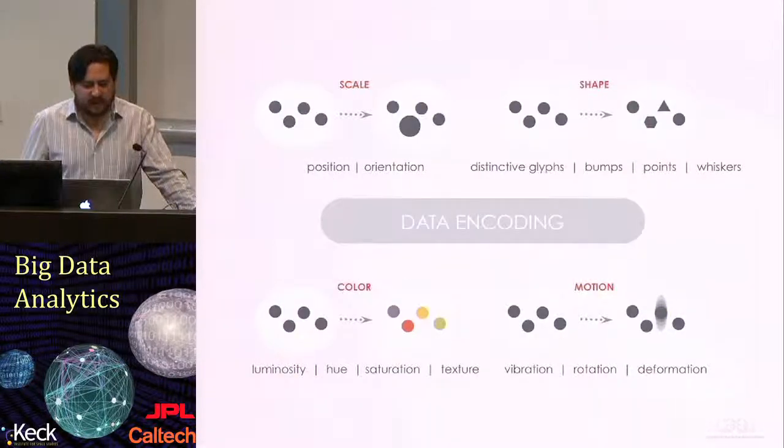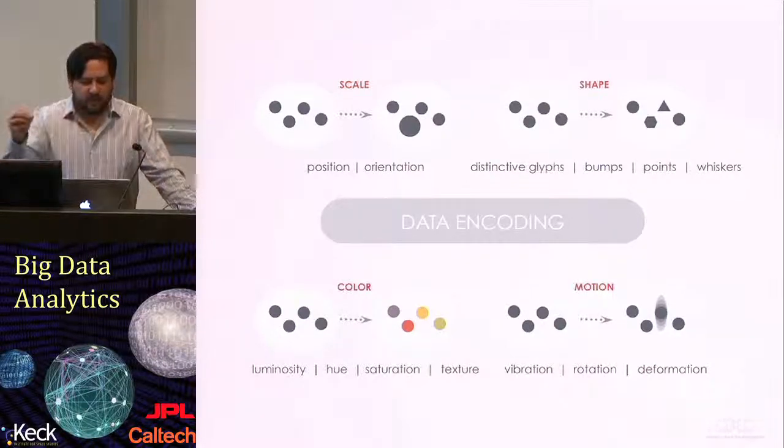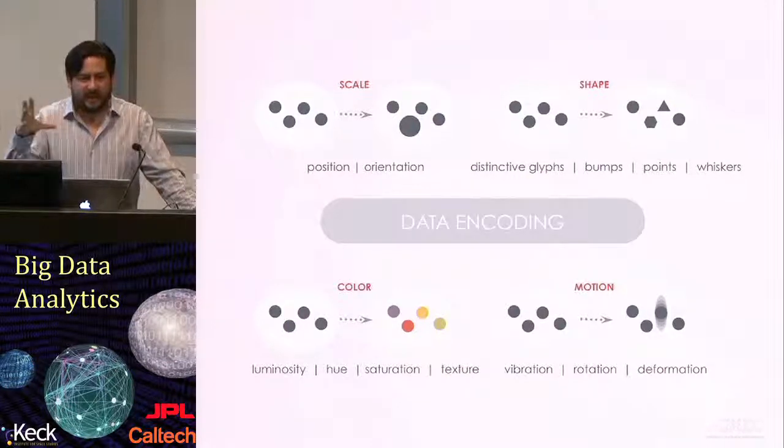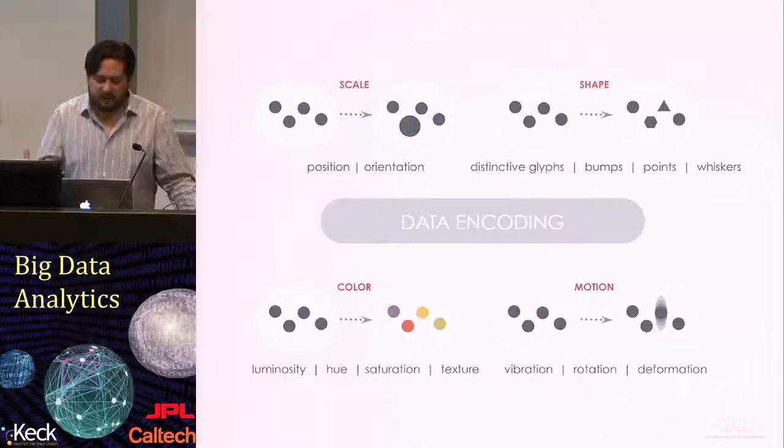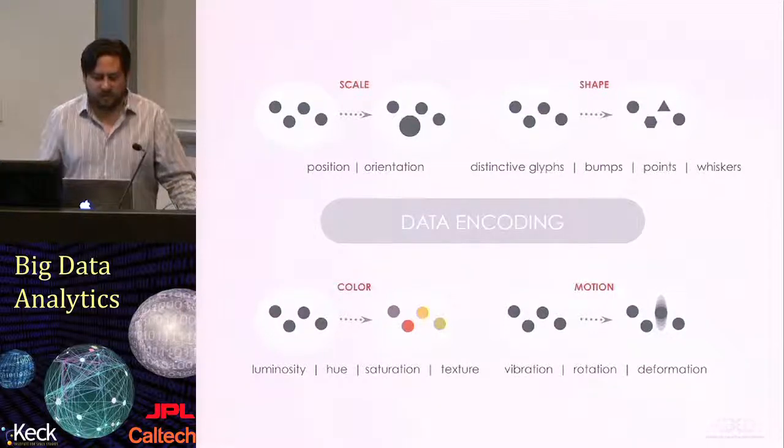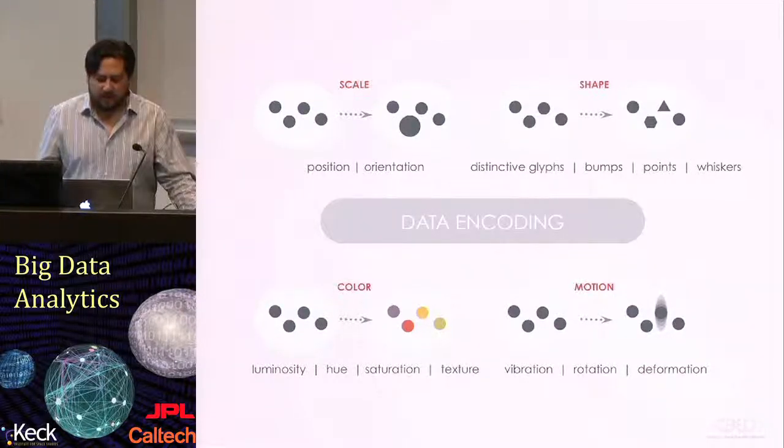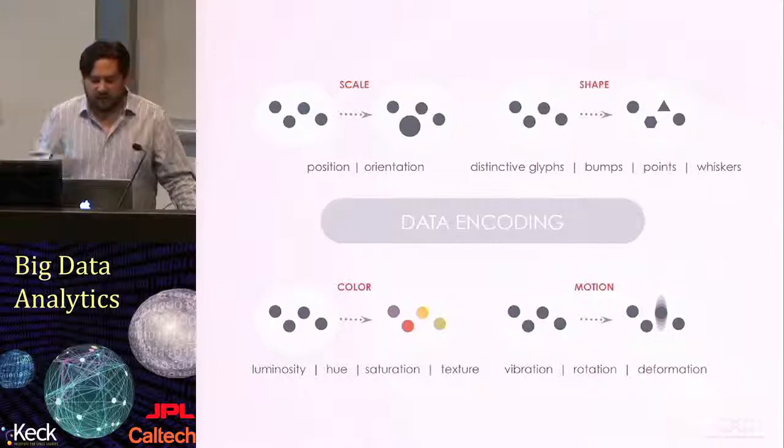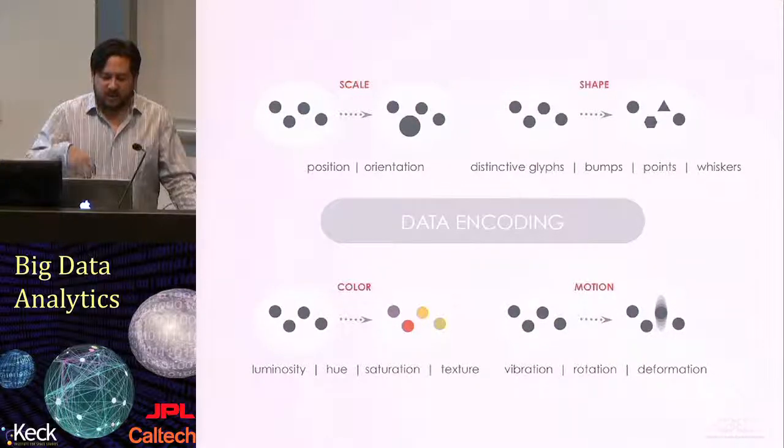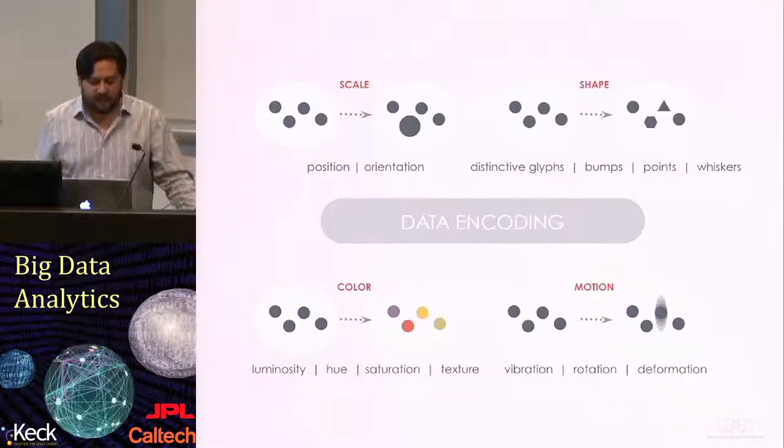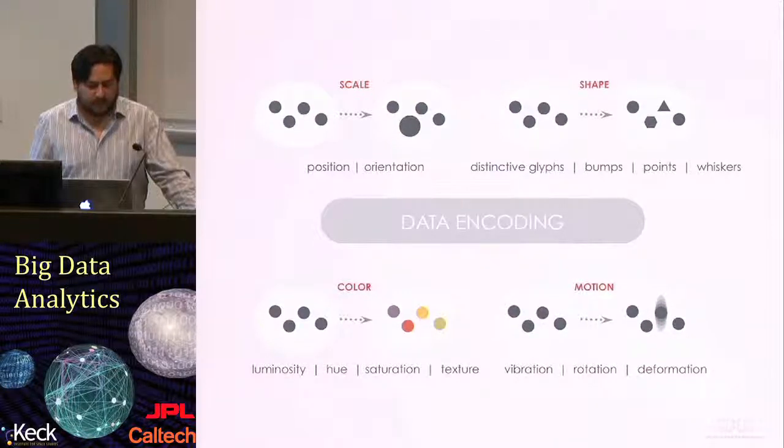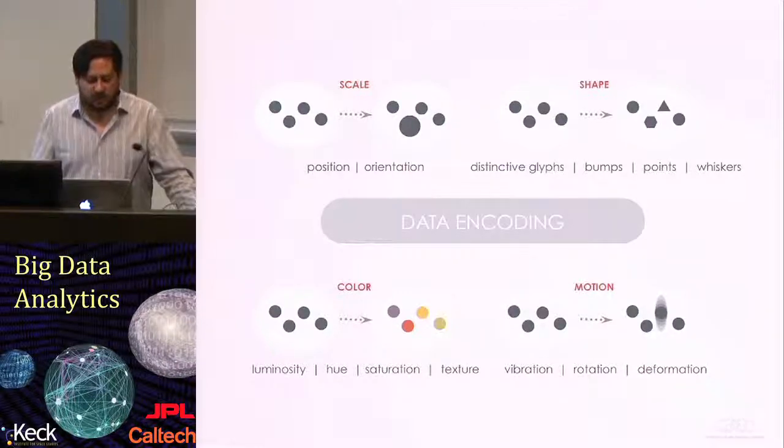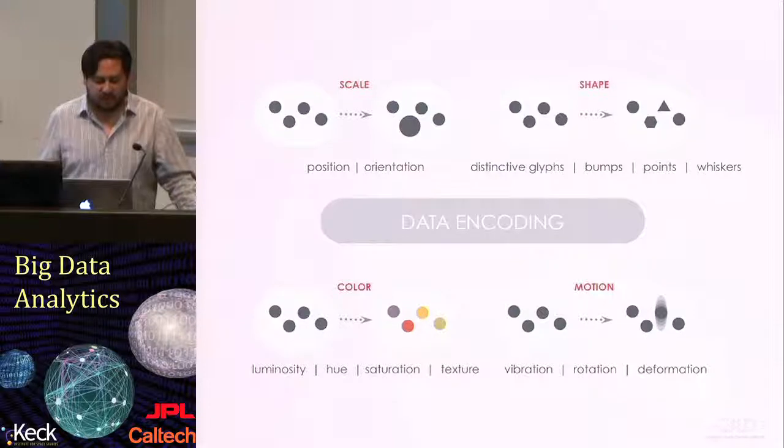If you're representing data, imagine a scatterplot, you can have different points on the screen which are represented by their position already telling you information, but you can actually scale them in different ways to actually show an additional variable. You can orient them to even show more interesting information. You can vary their shape, you can add distinctive points, you can tie information together, you can add whiskers like we saw with the boxplots, you can make more complex glyphs like we saw with the star glyphs, and of course, you can use color which you can actually vary both the hue, saturation, as well as the luminosity.